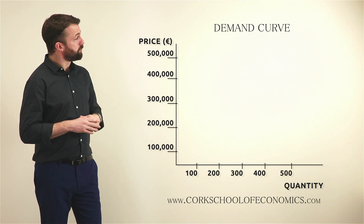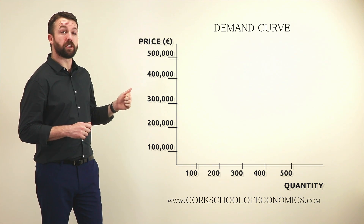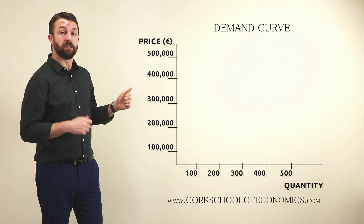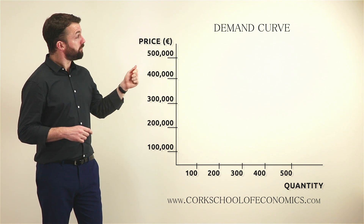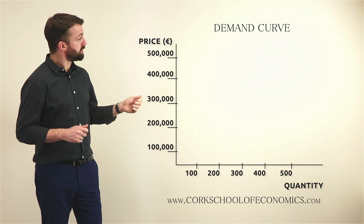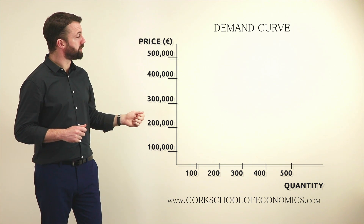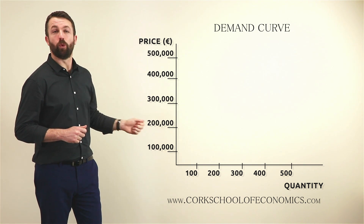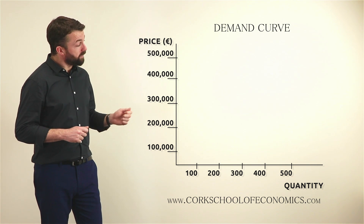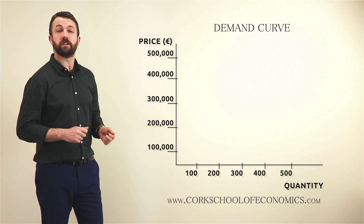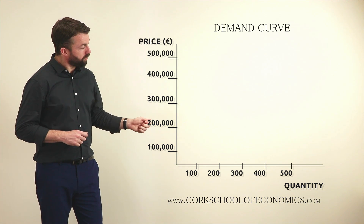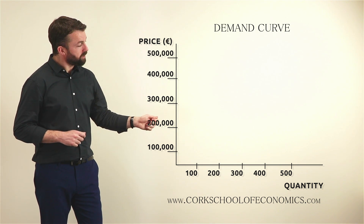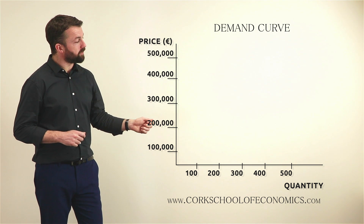On the visual here we see price on the vertical axis, denoted in hundreds of thousands of euros: 500,000, 400,000, 300,000, 200,000, and 100,000. On the horizontal axis we see quantity, denoted in hundreds of units: 100, 200, 300, 400, and 500.